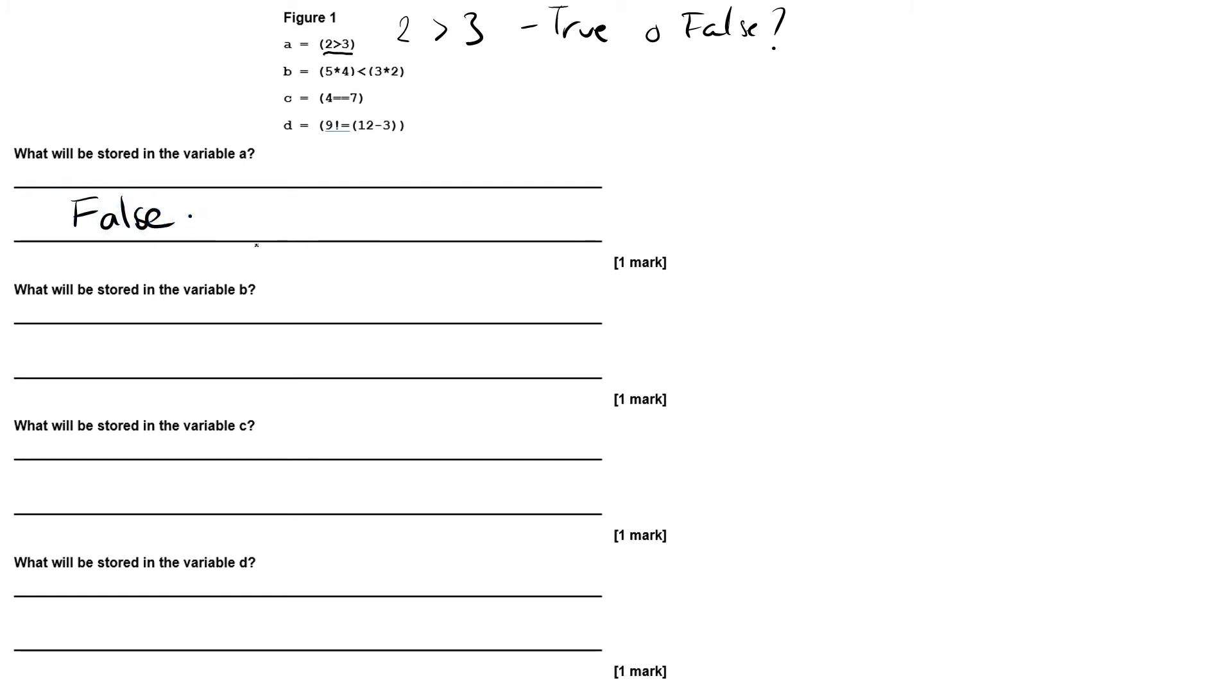What will be stored in the variable b? So it's a little bit trickier. We've got here five times four which is twenty, is less than three times two which is six. So we're saying twenty is less than six.